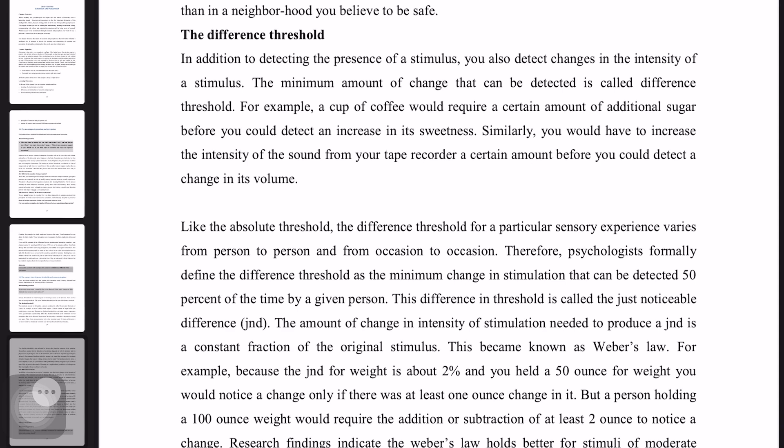In addition to detecting the presence of a stimulus, you also detect the change in intensity of a stimulus. If you have a problem with the absolute threshold, you can detect the presence of a stimulus. The minimum amount of change that can be detected is called the difference threshold.